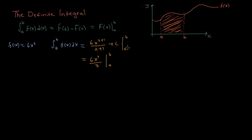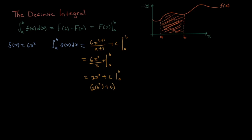This A to B is called an interval. So we have 2x cubed plus C from A to B. What we're going to do is substitute B into x and then subtract another function where we substitute A into x. So we'll have 2 times B cubed plus C, minus 2 times A cubed plus C.